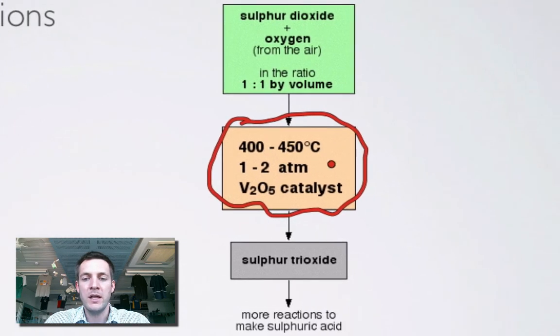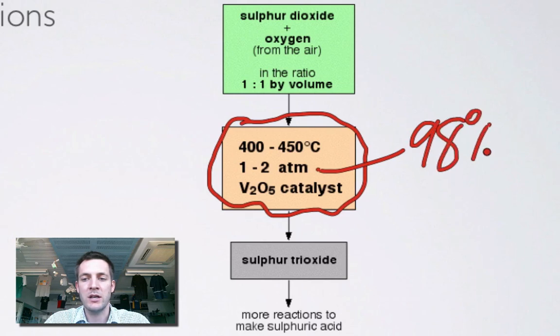Only one to two atmospheres here. Why is that? Well, in actual fact, this process at atmospheric pressure has about 98 percent yield. So there's no real reason to go spending money on increasing the pressure if you've already got such a high yield. But you need to pressurize the gases a little bit, otherwise they're not going to go anywhere.